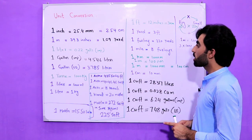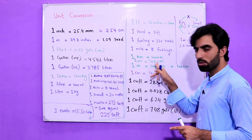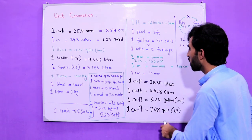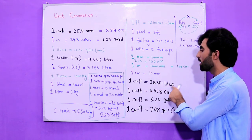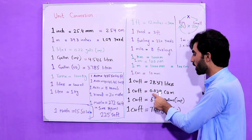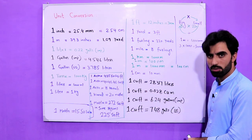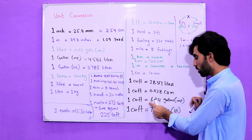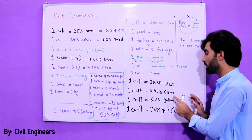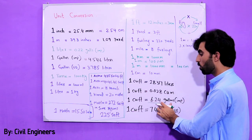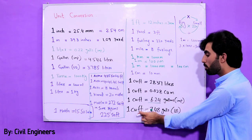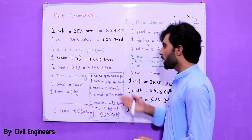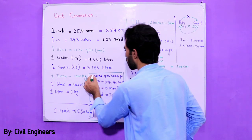In one centimeter we have 10 millimeters. In one cubic foot we have 28.317 liters, and one cubic foot equals 0.028 cubic meters. In one cubic foot we have 6.24 imperial gallons and 7.48 US gallons.